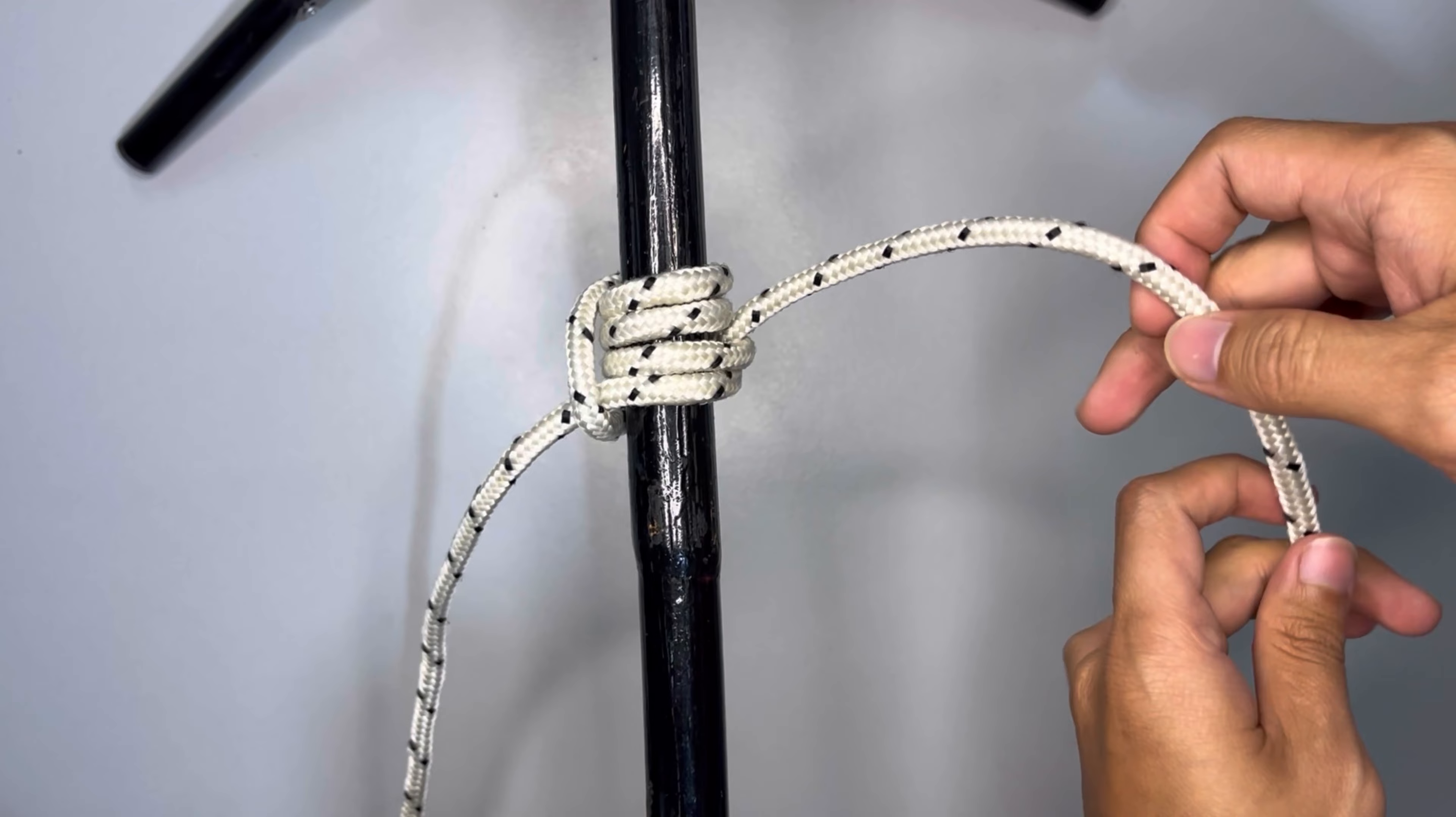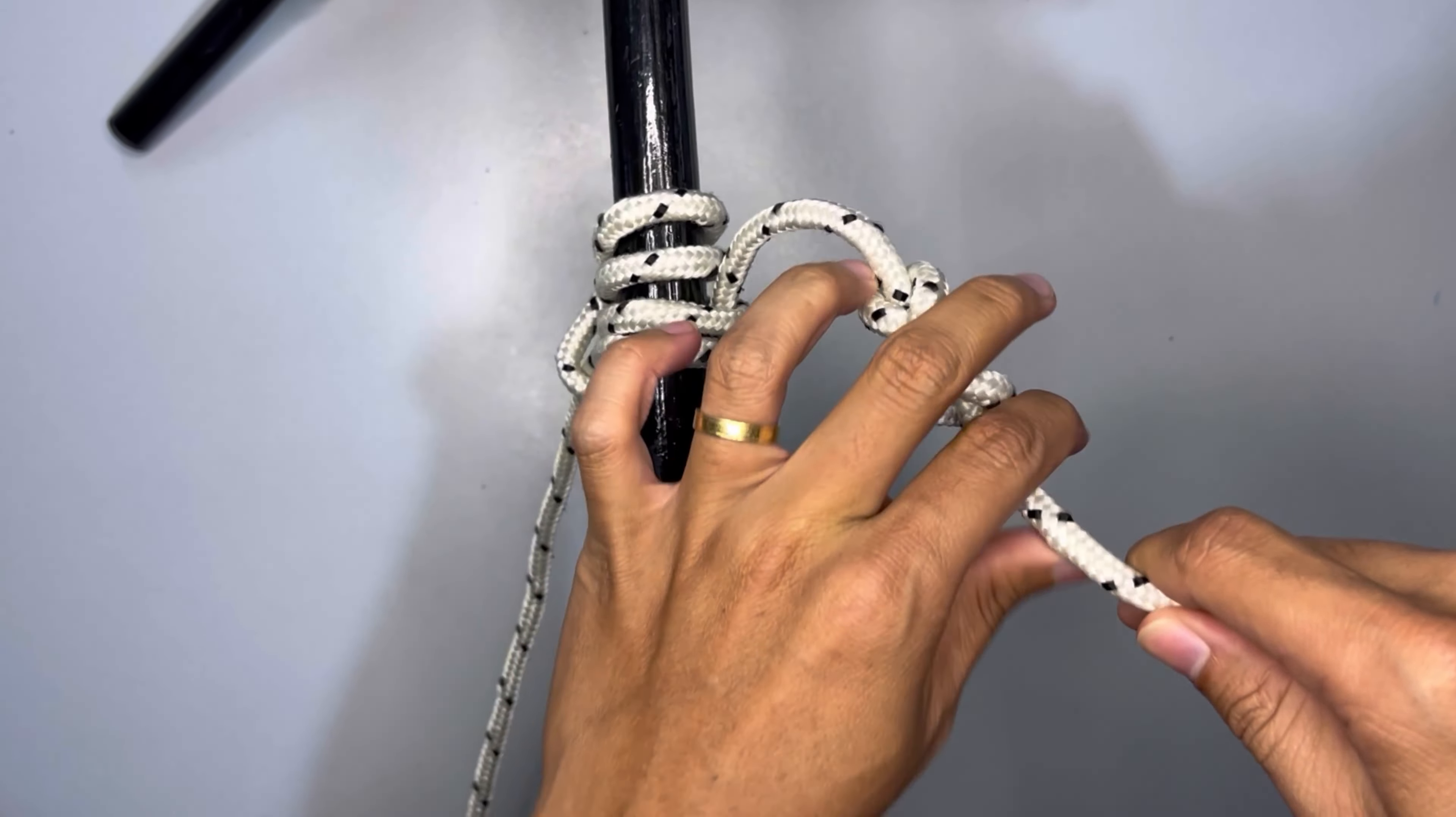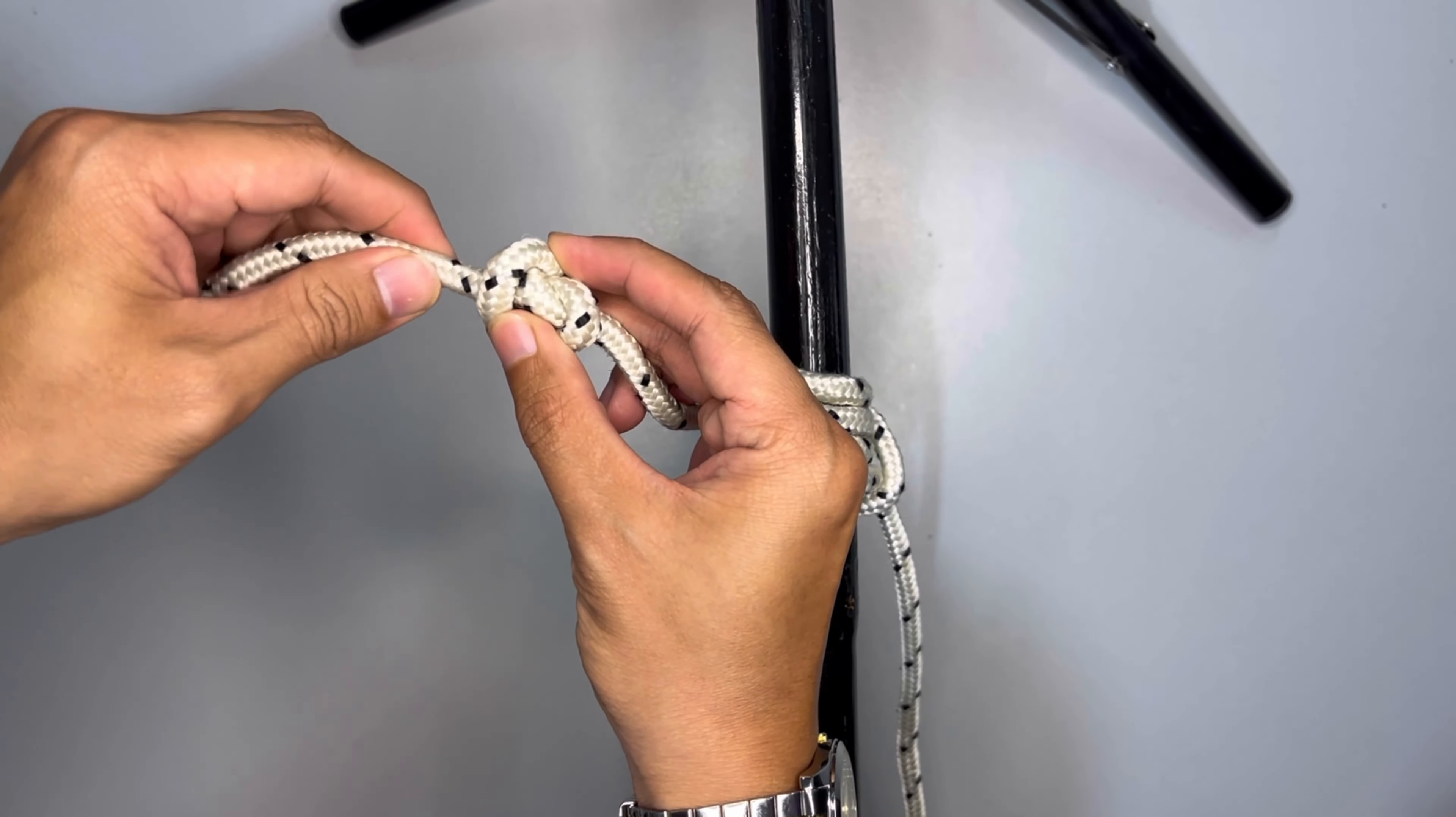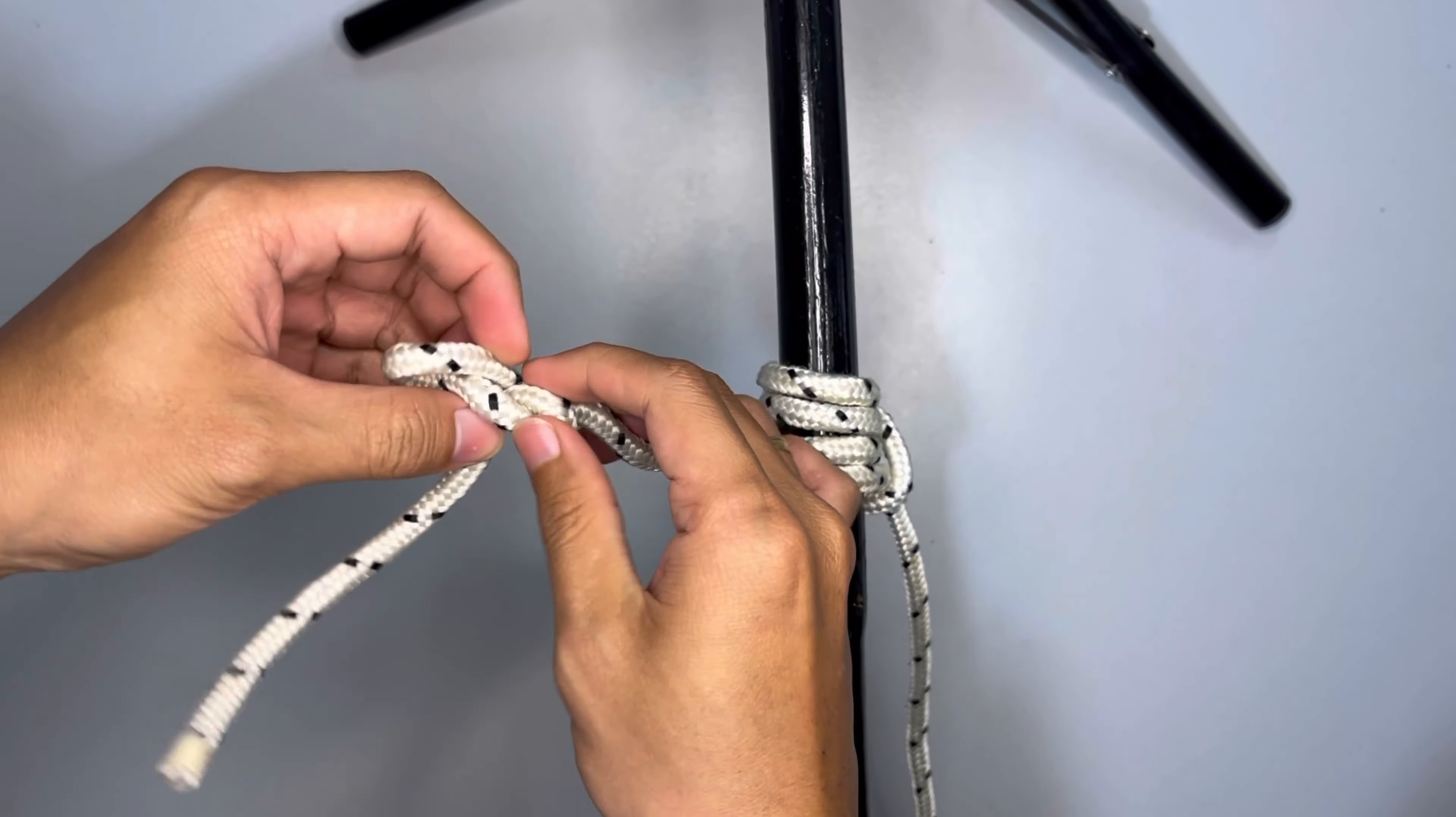Step 6: Secure a double overhand knot in the working end to prevent a slip. There you have it.